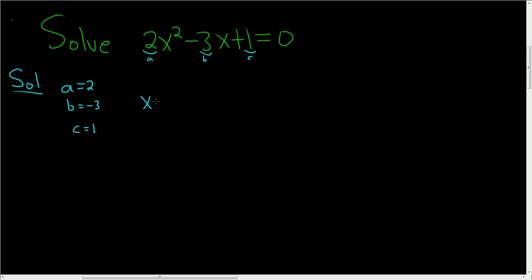Then you usually write down the formula. Now when you're first learning to use the quadratic formula, it's probably a good idea to write it down every single time. So it's negative B plus or minus the square root of B squared minus 4AC, all divided by 2A.